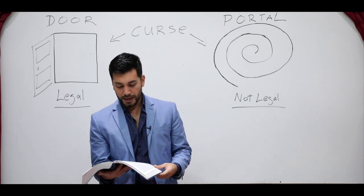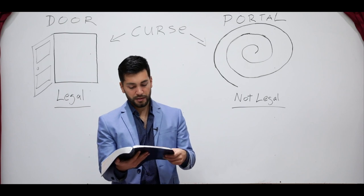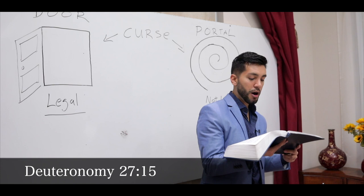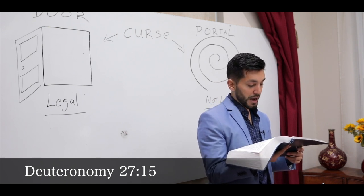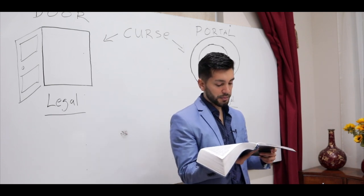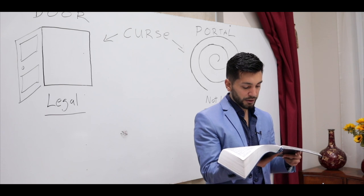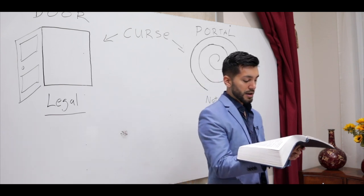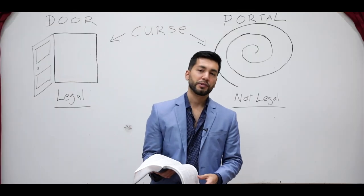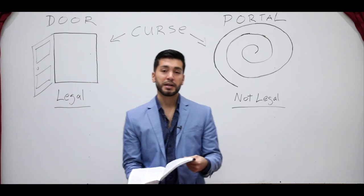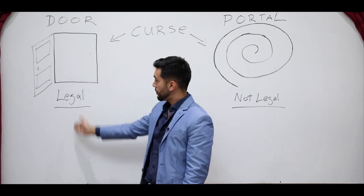There are also curses that the whole congregation declares upon themselves if they do these things. Chapter 27, verse 15 says: 'Cursed is the one who makes a carved or molded image, an abomination to the Lord, and sets it up in secret. And all the people shall answer and say, Amen. Cursed is the one who treats his father or his mother with contempt. Cursed is the one who moves his neighbor's landmark. Cursed is the one who makes the blind to wander off the road. Cursed is the one who perverts the justice due to the stranger, the fatherless, and the widow.' Here we see the curses that come upon somebody for sinning, for breaking the commandments, for doing wrong to their neighbors. So they're cursed — a door is opened, a curse comes upon them, and it's legal.